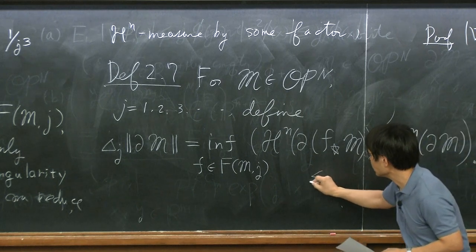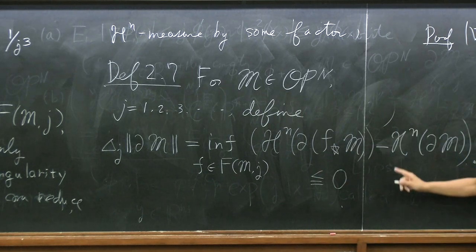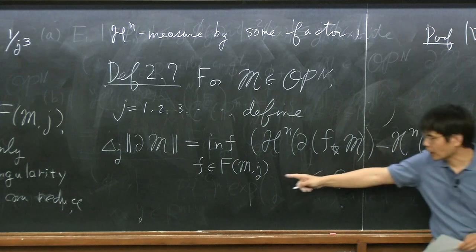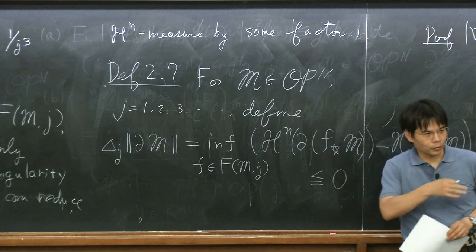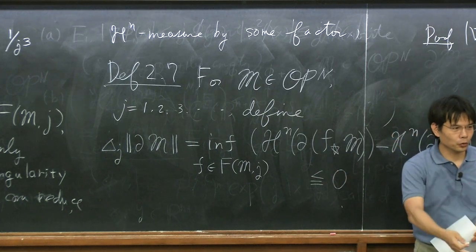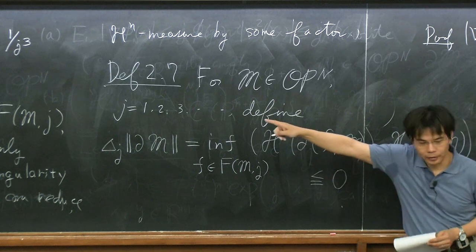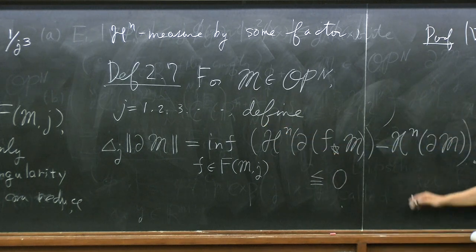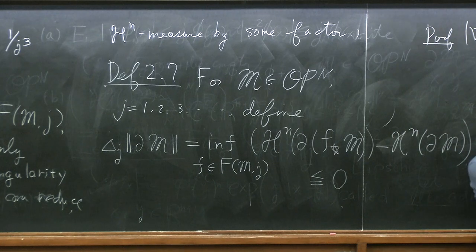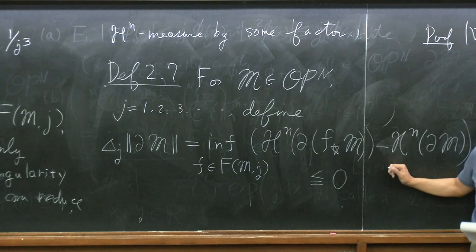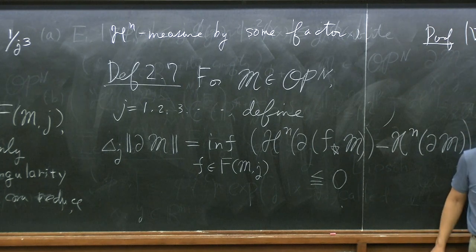Since identity map is always in this class, δ_j(M) ≤ 0. But you can perhaps do better — you can reduce the measure, just like in the example I described. So δ_j(M) is a measurement of how much you can reduce measure within the scale of 1/j², and it totally localizes this deformation around singular points.